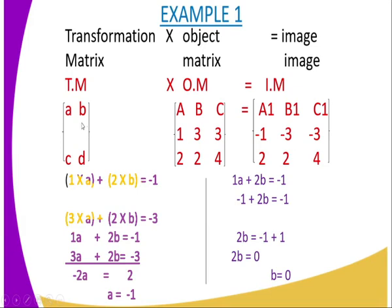We apply the matrix multiplication rule: take the row in the first matrix and multiply by the column in the second matrix. As a memory aid — Roman Catholic — Roman refers to the row of the first matrix, Catholic refers to the column of the second matrix. So: A×1 + B×2 equals negative 1, which is the x-coordinate of image A1.